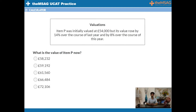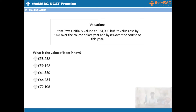Question 2. Item P was initially valued at £54,000, but its value rose by 14% over the course of the last year, and by 8% over the course of this year. What is the value of item P now?